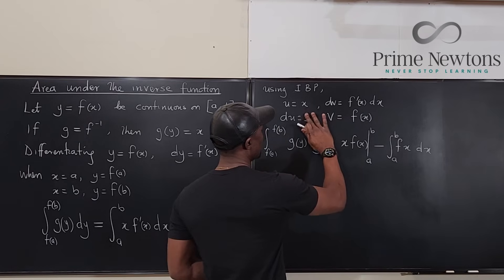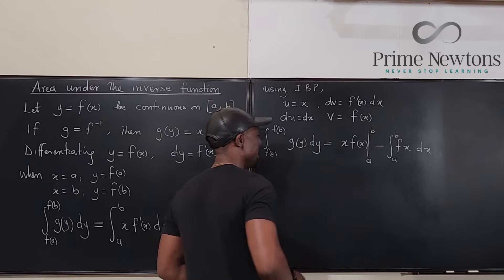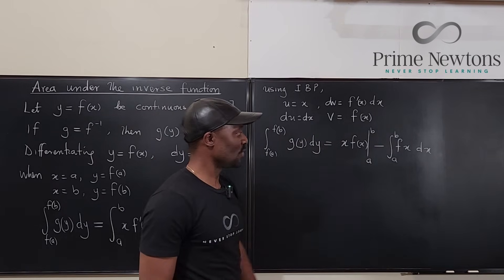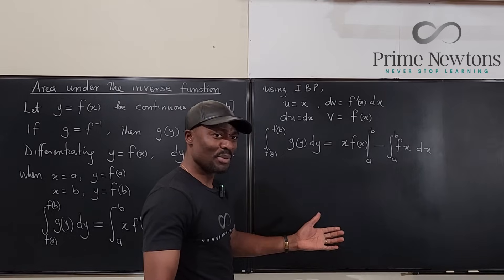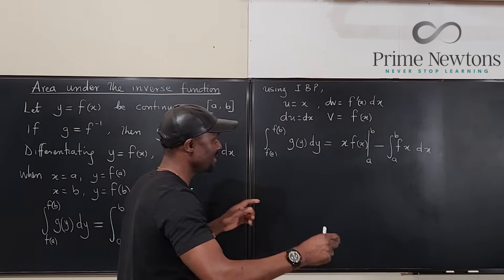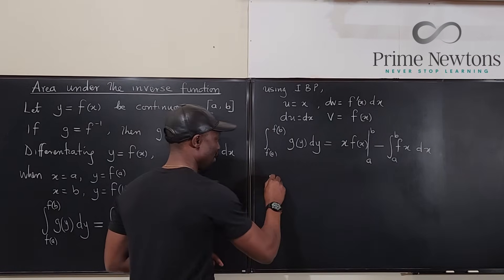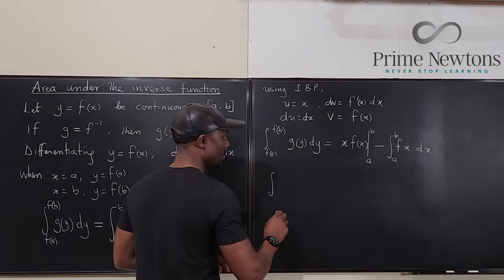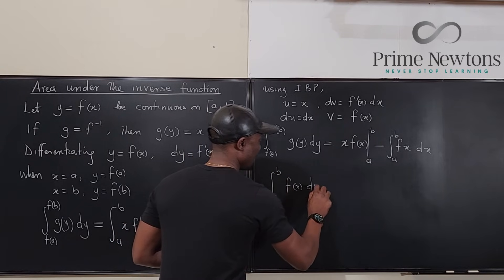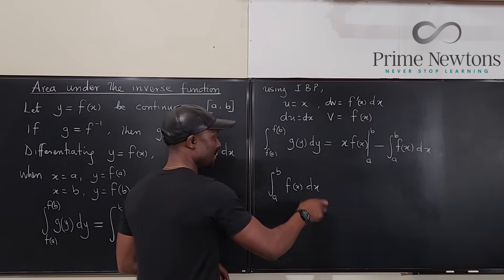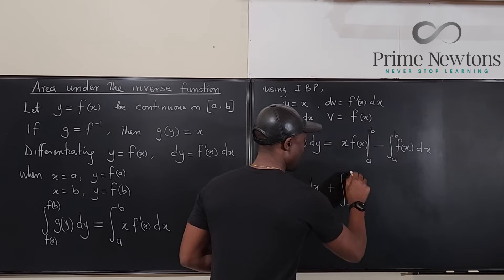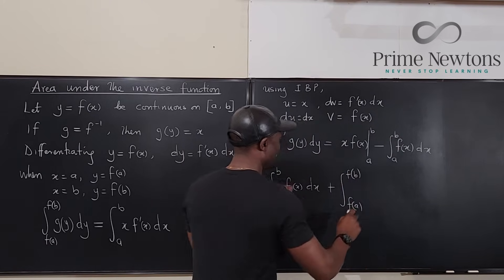Correcting a minor slip: du = dx, not just 1, so the v du term is f(x) dx. Notice we've come back to the original integral of f(x). If I bring the integral of f(x) from a to b over to this side, I get: the integral from a to b of f(x) dx, plus the integral from f(a) to f(b) of g(y) dy...